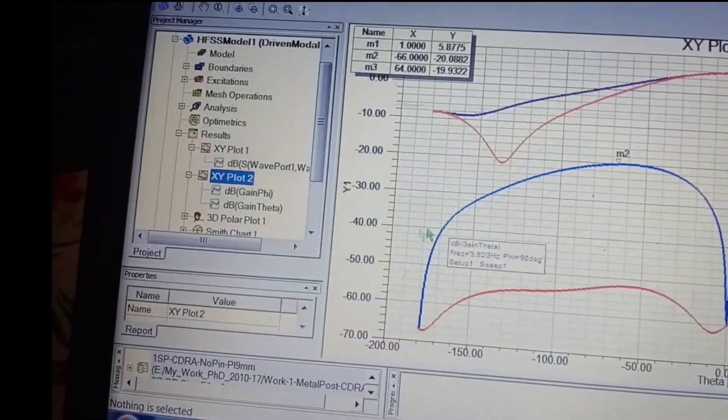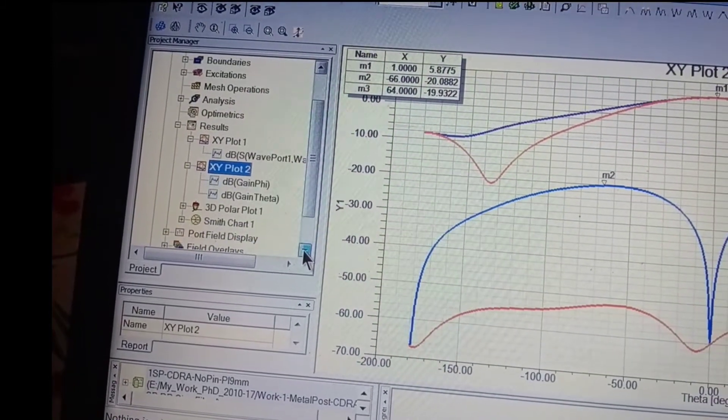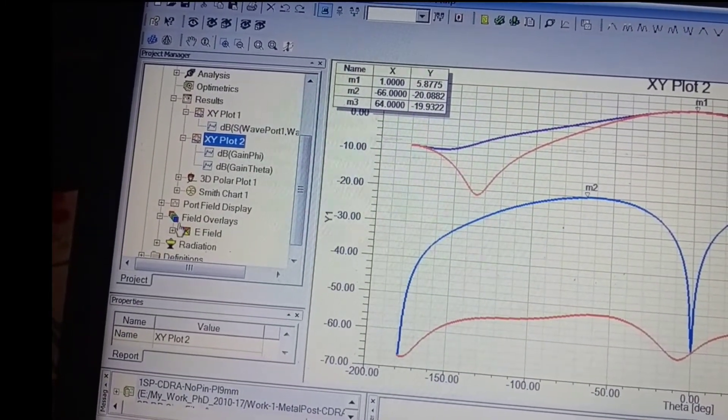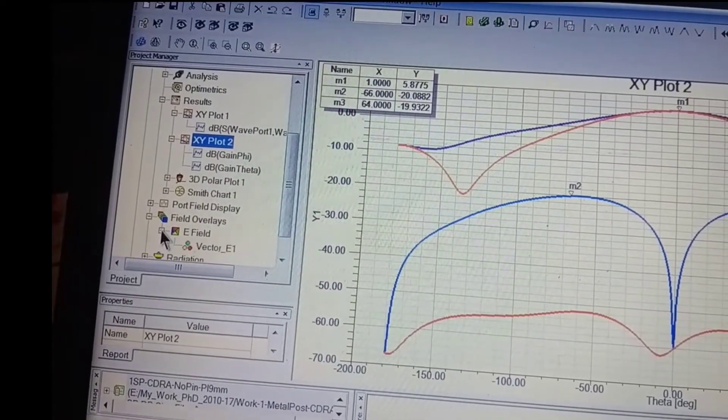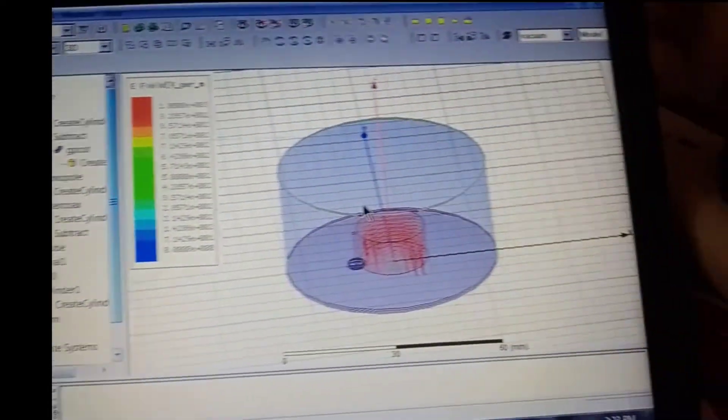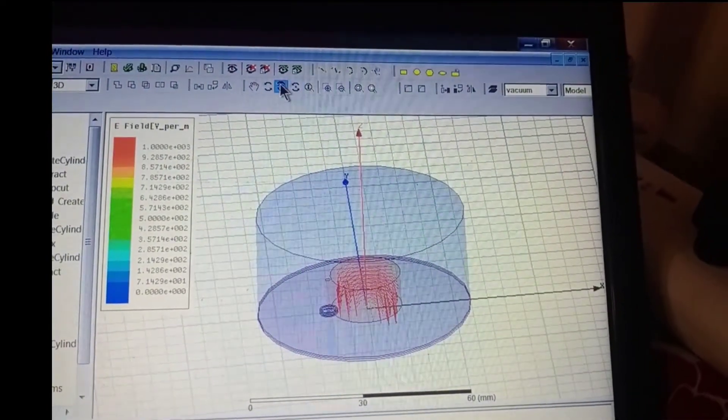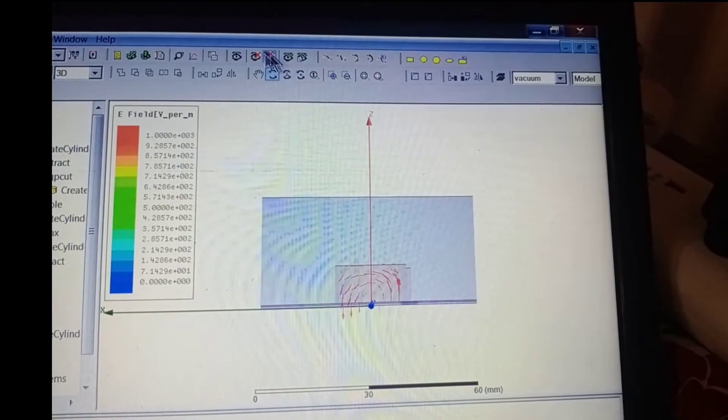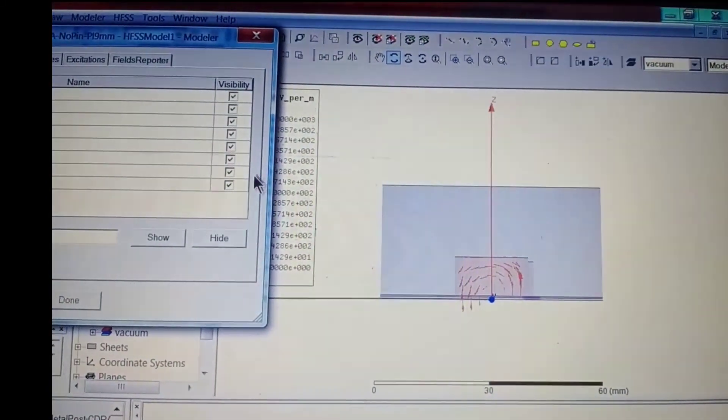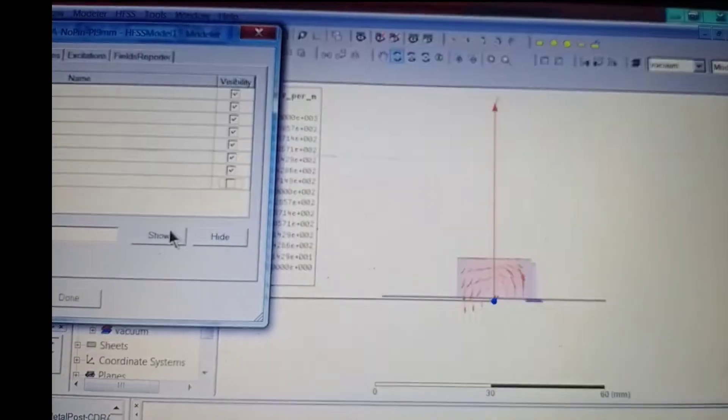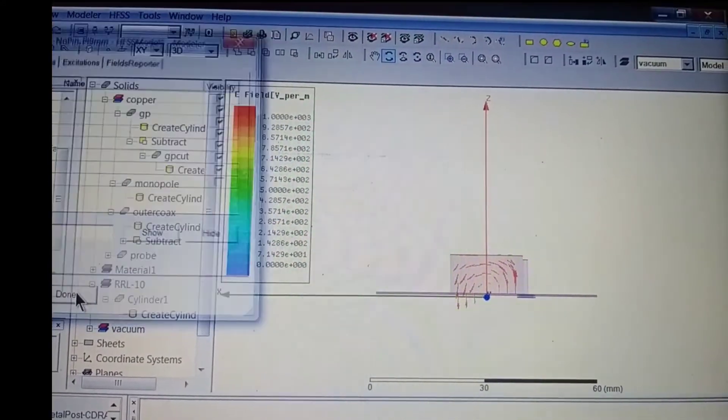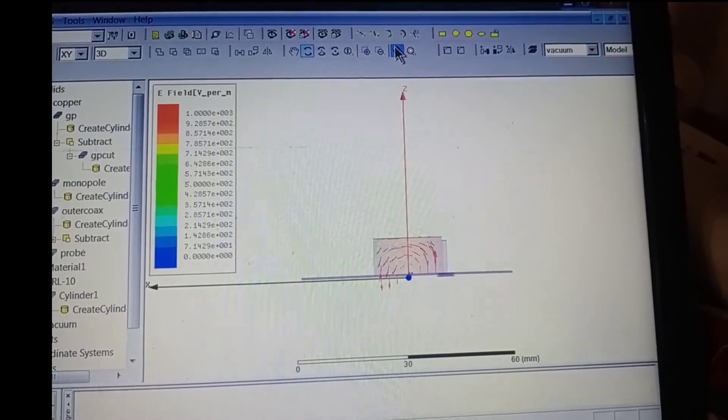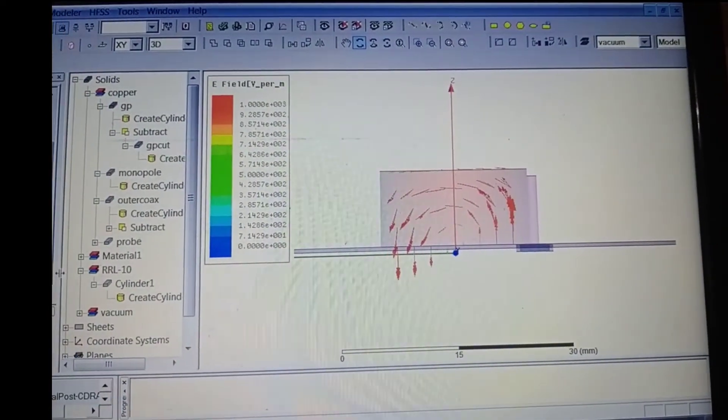And even you can see the field pattern. For field, E field pattern I will show you. I will avoid this radiation box. So animate this.